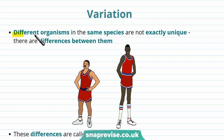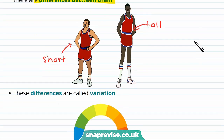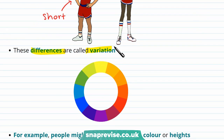Different organisms in the same species aren't exactly unique — there are differences between them. For example, if you look around a room of people, you can see that some people may be tall whereas others may be short, and some people may have light hair whereas others may have dark hair. Even identical twins have some differences between them, though they might not be immediately obvious. So these differences between people are called variation.